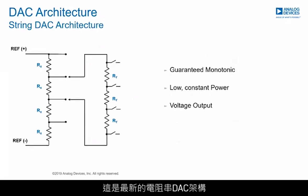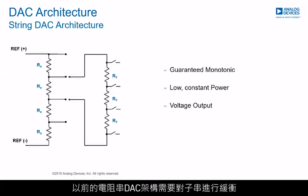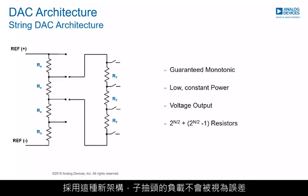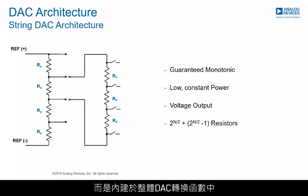This is the newest string DAC architecture, and it overcomes the shortcomings of previous string DAC architectures. Previous string DAC architectures require the sub-string to be either buffered or be of a much higher impedance to overcome the loading effects of the sub-string on the main string. With this new architecture, the loading of the sub-DAC is not treated as an error, but is built into the overall DAC transfer function.